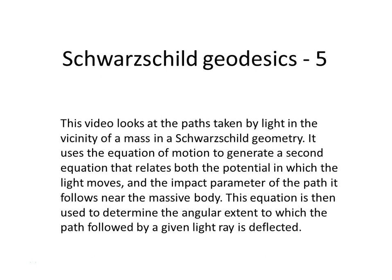This video looks at the path taken by light in the vicinity of a mass in a Schwarzschild geometry. It uses the equation of motion to generate a second equation that relates both the potential in which the light moves and the impact parameter of the path it follows near the massive body. This equation is then used to determine the angular extent to which the path followed by a given light ray is deflected.